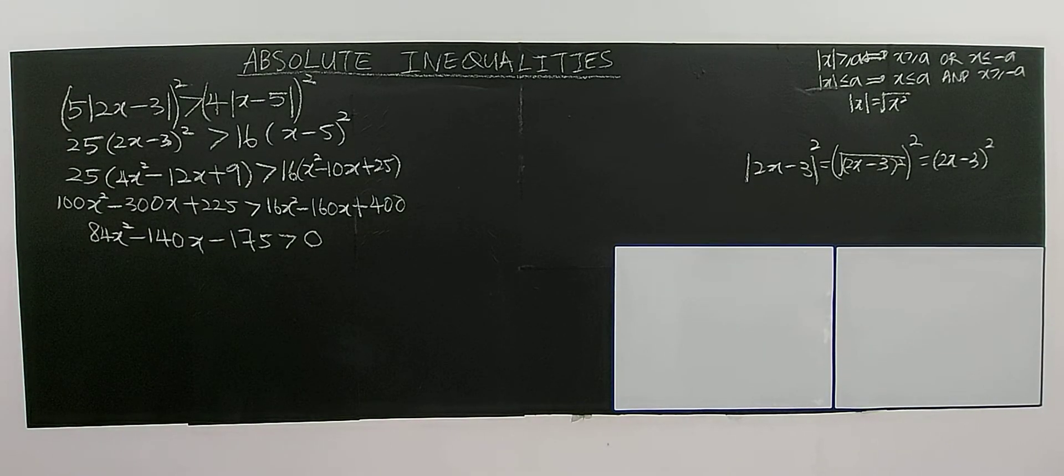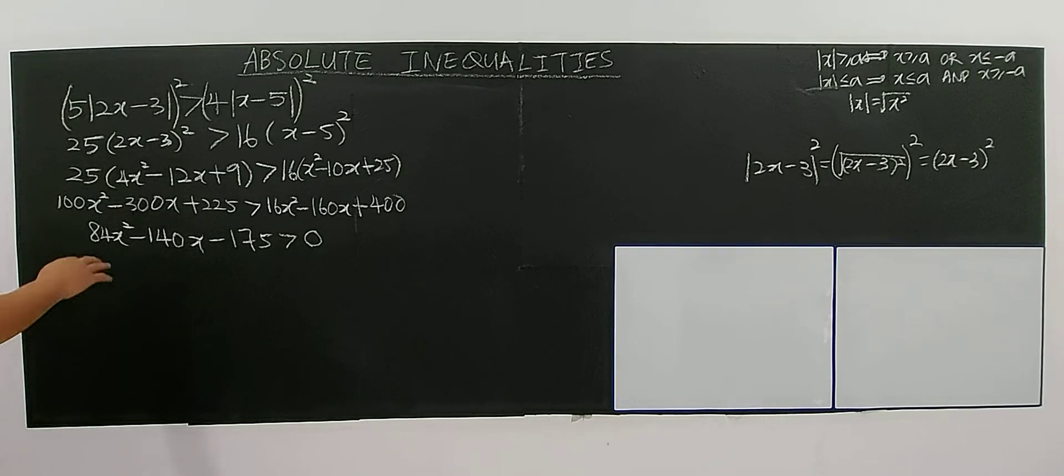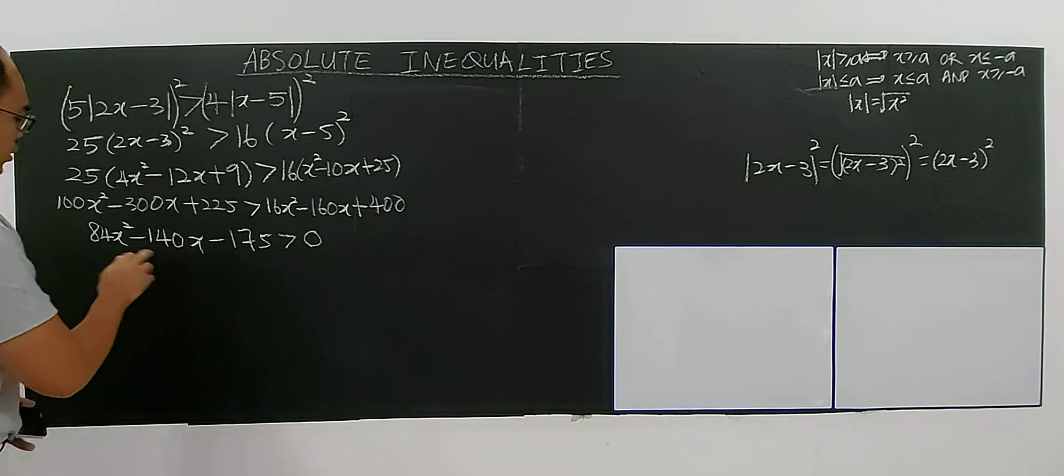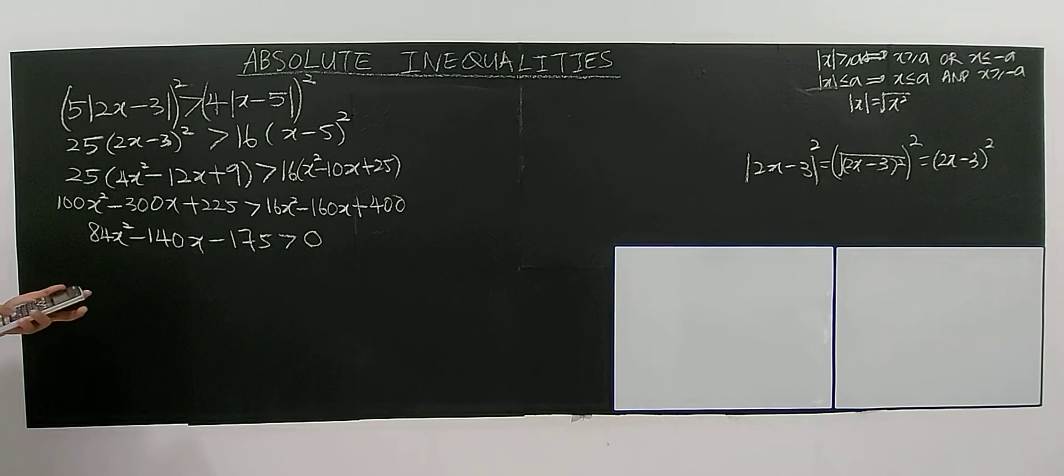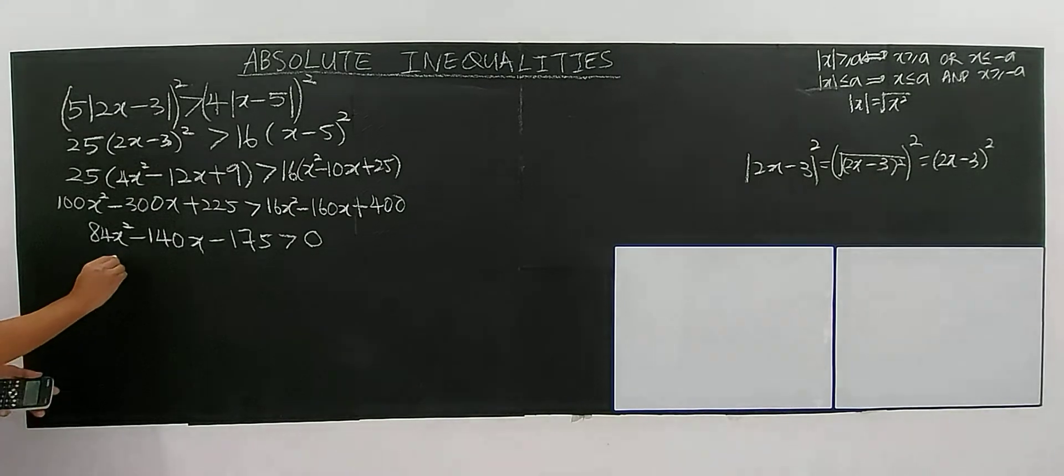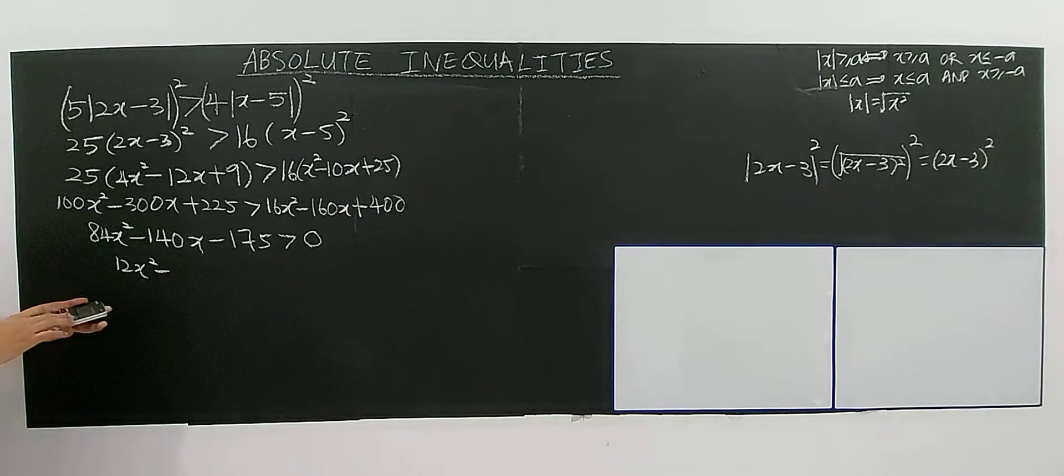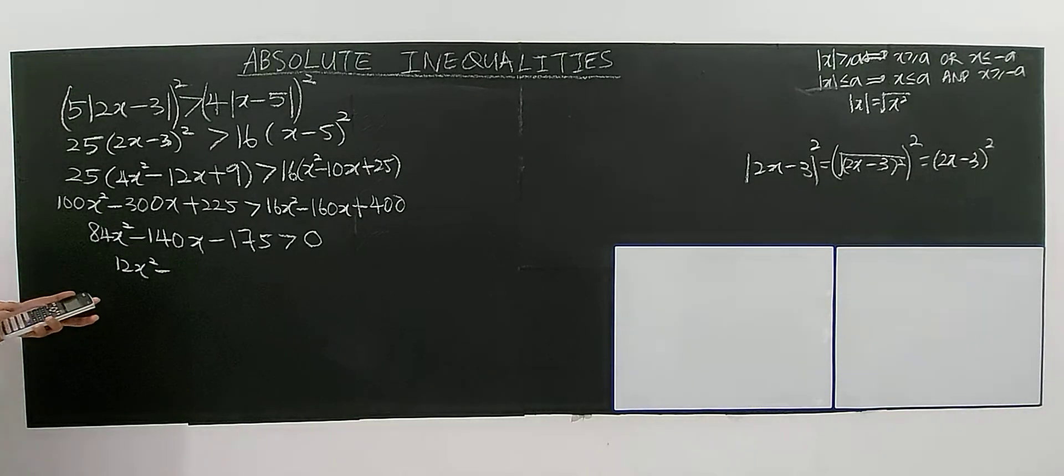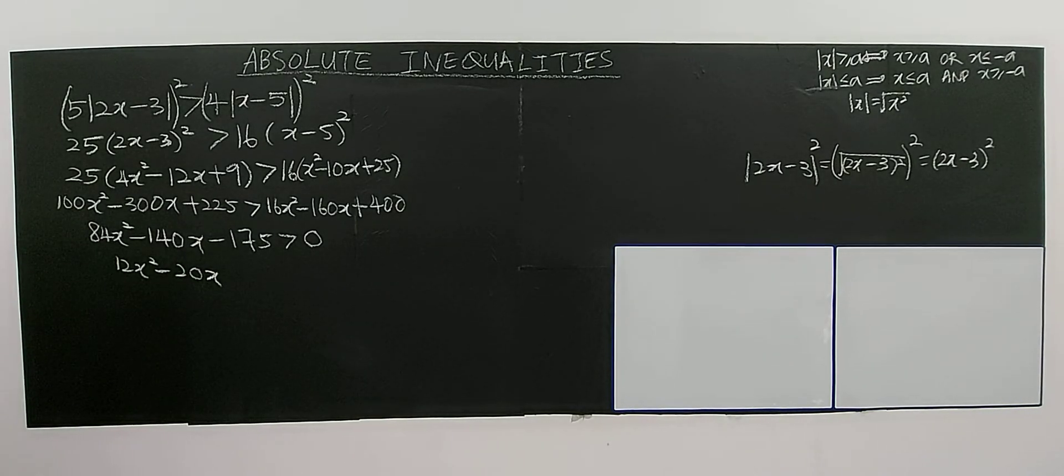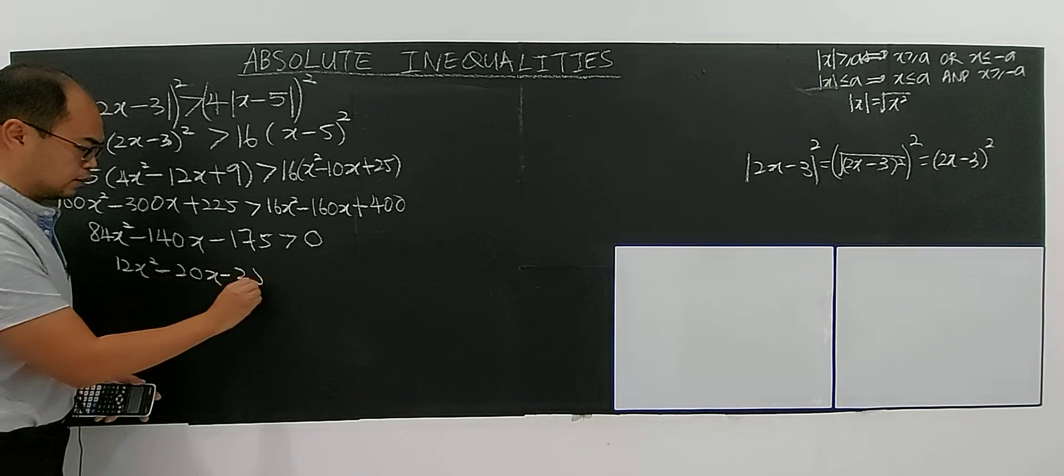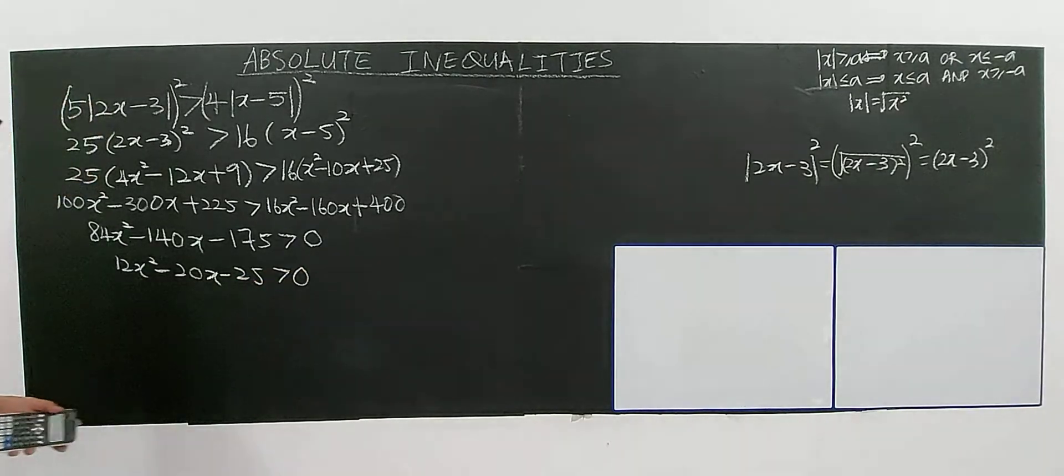So I think you can divide everything by 7, if I'm not mistaken. This is all the factor, it's all the multiple of 7. So 84 divided by 7 you have 12x to the power of 2, this one you have 20x, and 175 divided by 7 you have 25, greater than 0. Now I have already simplified. The most important thing is you use the correct method: you're doing squaring both sides.